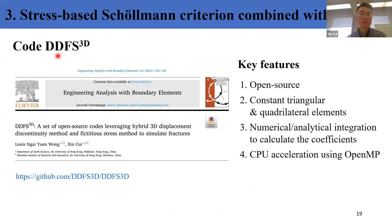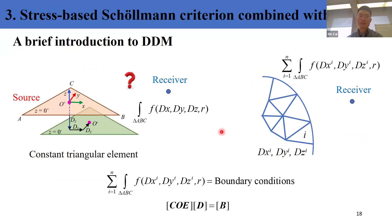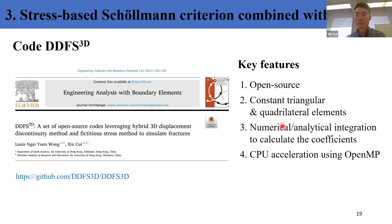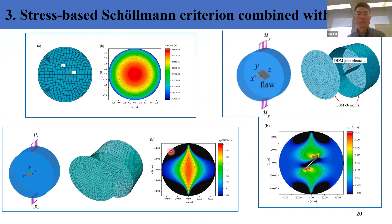Here I introduce the code DDFS3D, which was developed by me and my advisor during my PhD. The displacement discontinuity method is included in this code. Key features: it's open source; both constant triangular elements and quadrilateral elements are available; both numerical and analytical integration are available to calculate the coefficient matrix, making it very robust; and CPU acceleration is in place to speed up the calculation.